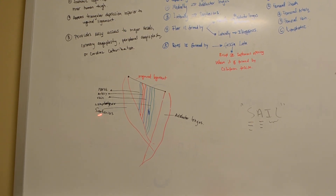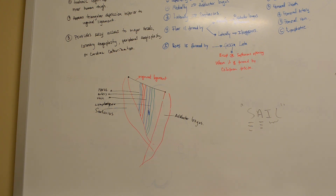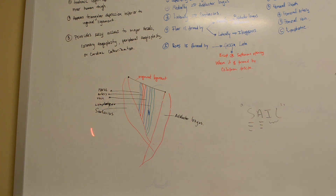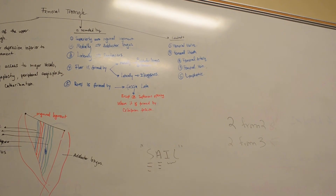As we can see here, the sartorius forms the lateral border of the femoral triangle, the adductor longus forms the medial border, and the inguinal ligament forms the superior border. From lateral to medial, the contents include the femoral nerve, which is located outside of the femoral sheath. The remaining contents — the femoral artery, femoral vein, and lymphatic vessels — reside inside the femoral sheath.